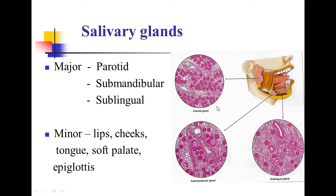The salivary glands are broadly classified into two categories: the major salivary glands and minor salivary glands. Major salivary glands consist of the parotid gland, submandibular gland, and sublingual gland. While minor salivary glands are present in the mucous membrane of lips, cheek, tongue, soft palate, and epiglottis.